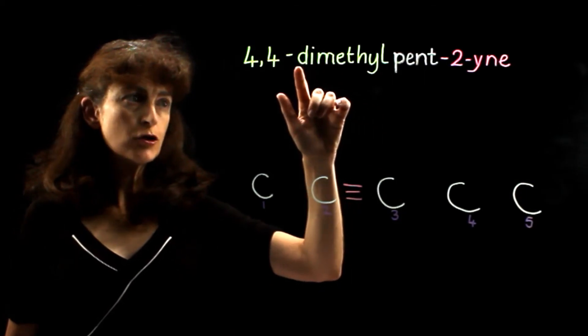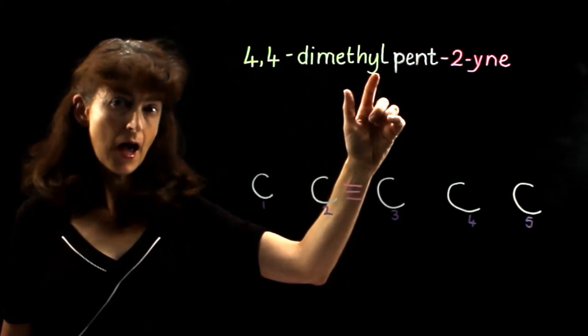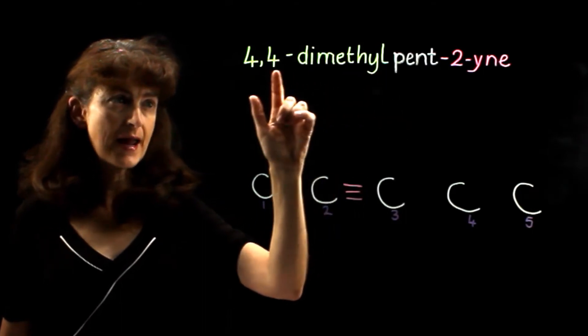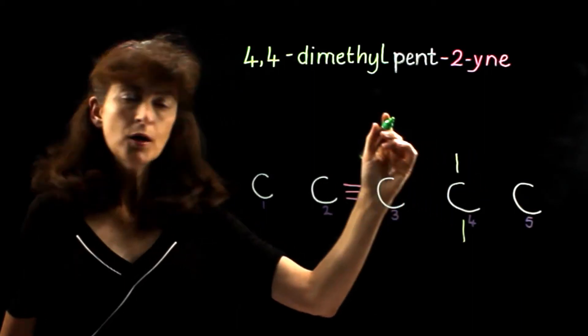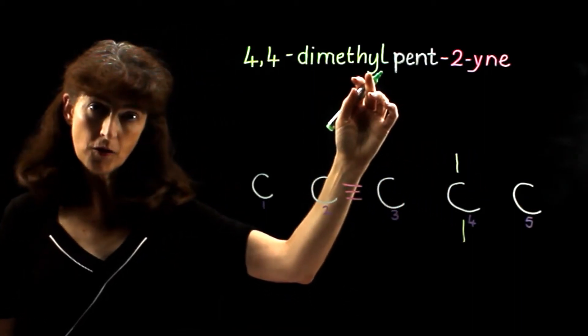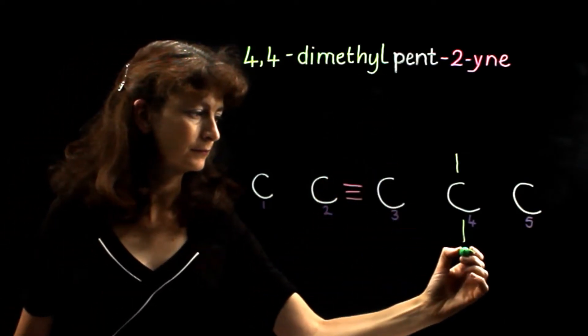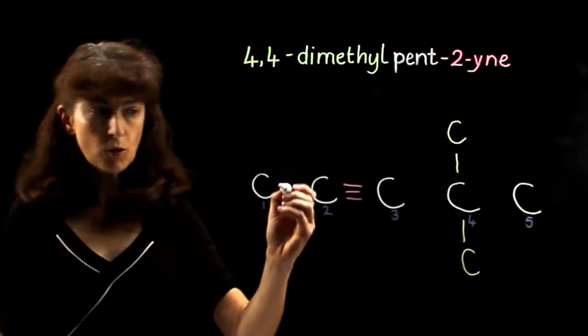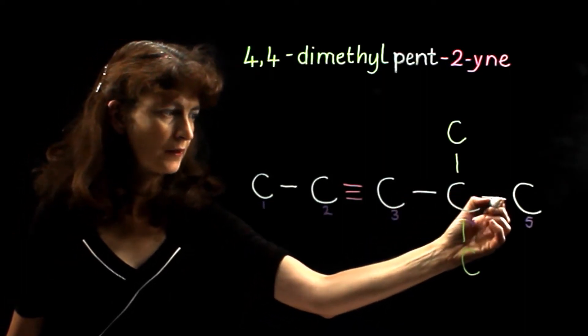We can see that there are two methyl branches and both of them are connected to carbon four. We know that methyl refers to a branch with one carbon. Of course we need to put these carbon-carbon bonds in as well.